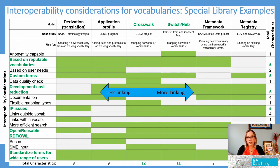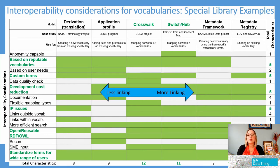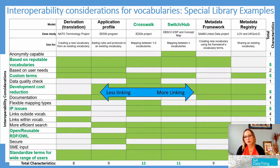Crosswalks and switch hub models are really the best for the return on your investment. When you're doing a mapping, one subject to one subject, you can use a crosswalk structure — there's nothing wrong with that. But once you get past three or four different vocabularies or data sources, that's where a crosswalk really falls short, mostly because it's very difficult to do a one-to-one mapping for that number of vocabularies.